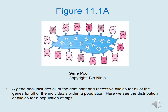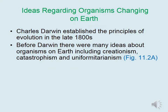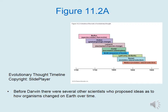Here we see the distribution of alleles for a population of pigs. We can't discuss evolution without discussing Charles Darwin, who established the principles of evolution in the late 1800s. However, before Darwin there were many ideas about organisms on earth including creationism, catastrophism, and uniformitarianism, and several other scientists who proposed ideas as to how organisms changed over time.